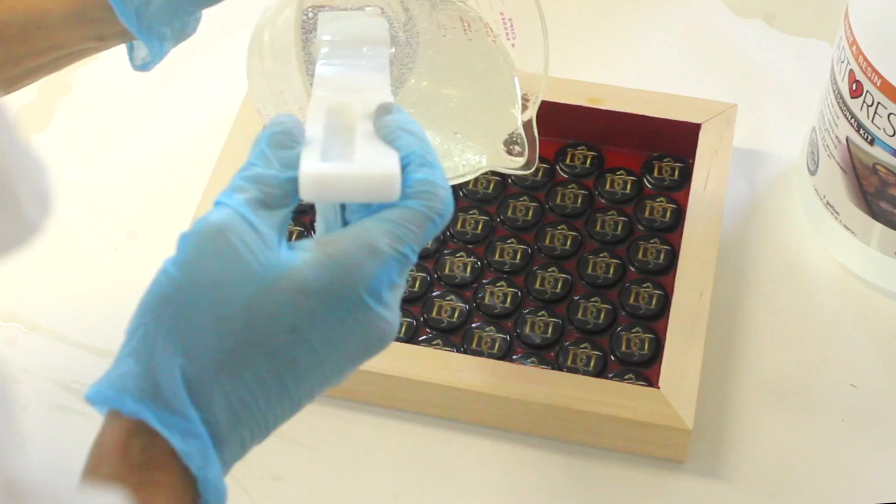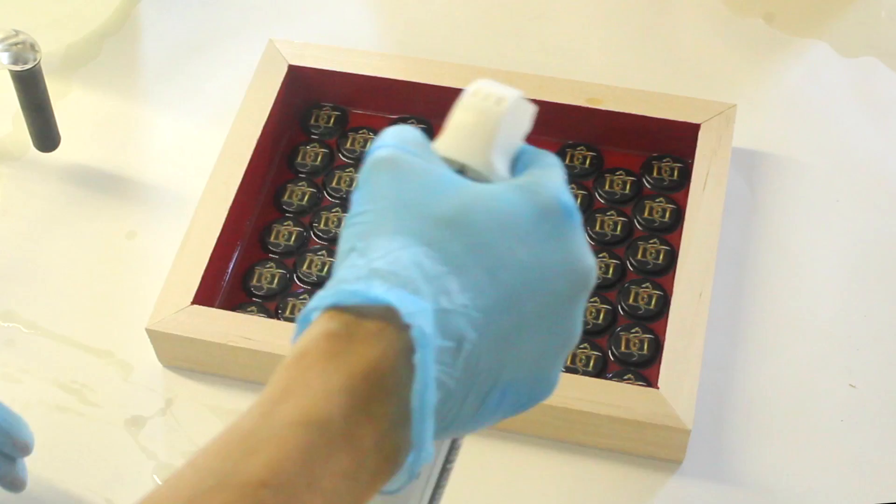So this time we need to mix a lot more resin so that we can totally cover the beer caps and get a smooth, glossy surface.